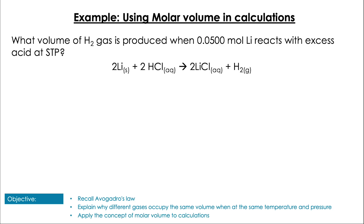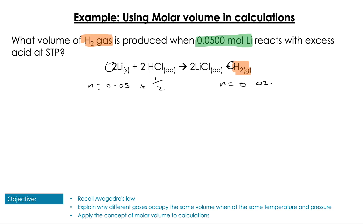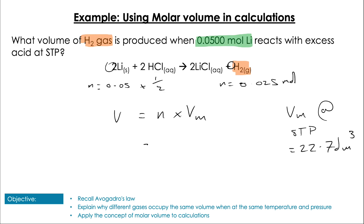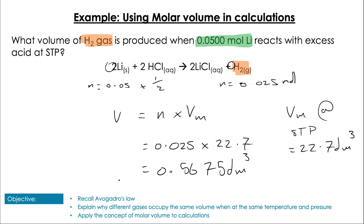How do we use this in calculations? Here's a simple one: what volume of H₂ gas is produced when we react 0.05 moles of lithium with excess acid at STP? We use the ratio of hydrogen to lithium, which is 1 over 2, so our number of moles of hydrogen is 0.025 mol. Then we use our equation for volume and molar volume, where molar volume at STP is 22.7 dm³/mol. Plugging in 0.025 × 22.7 gives a total volume of 0.5675 dm³.